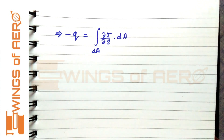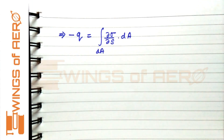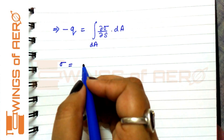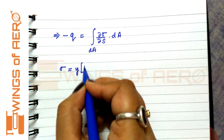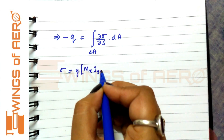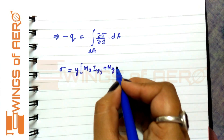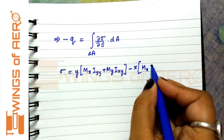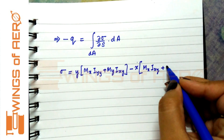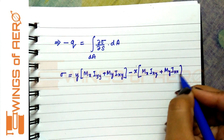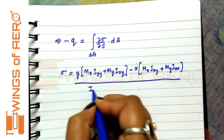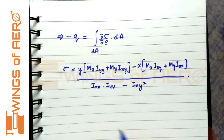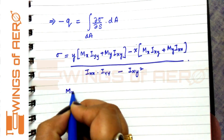For an unsymmetrical bending section, in place of sigma we write the sigma value from the k-method: σ = (Mx·Iyy + My·Ixy)/(Ixx·Iyy − Ixy²)·y + (My·Ixx − Mx·Ixy)/(Ixx·Iyy − Ixy²)·x. Now for the derivation of this k-method...